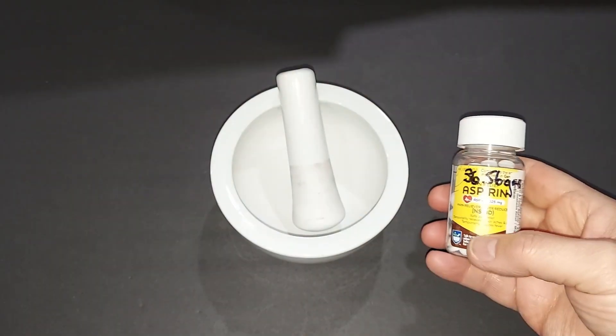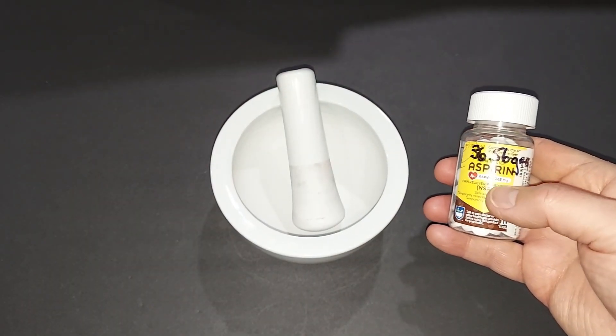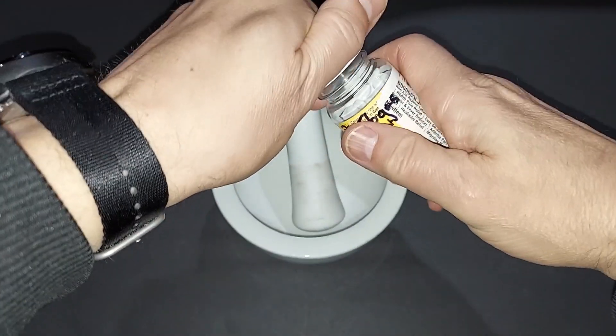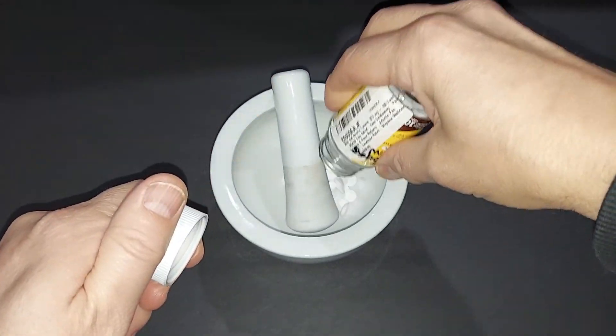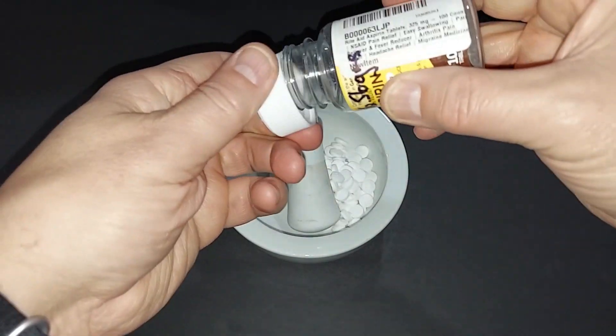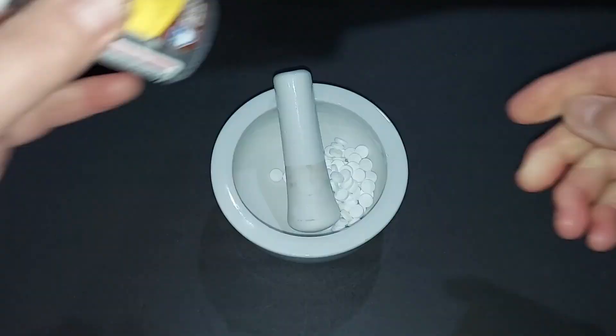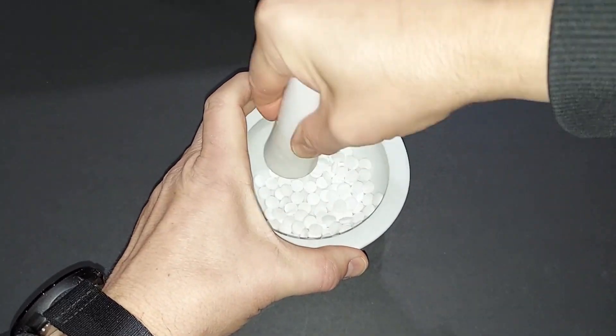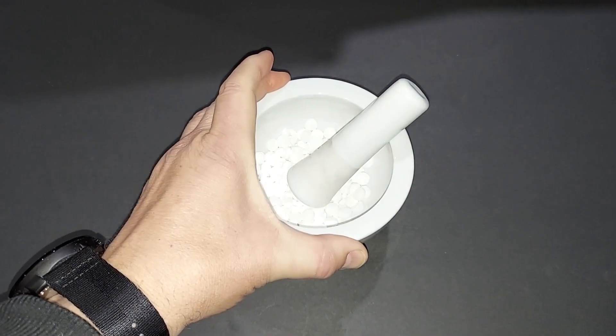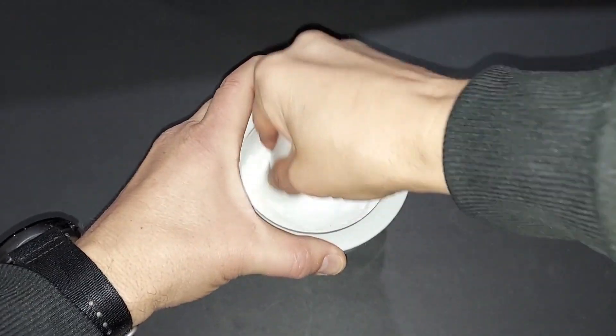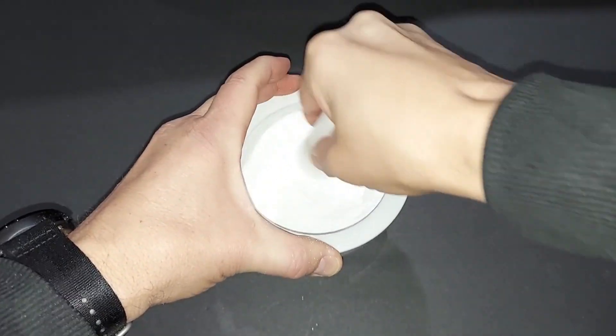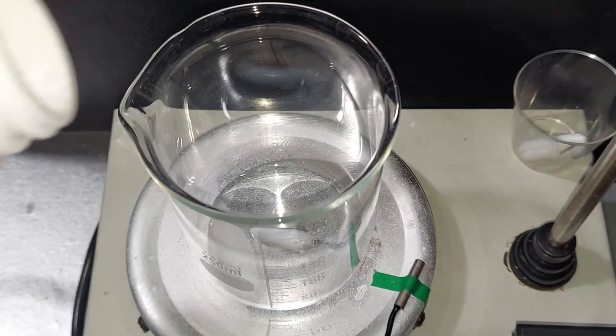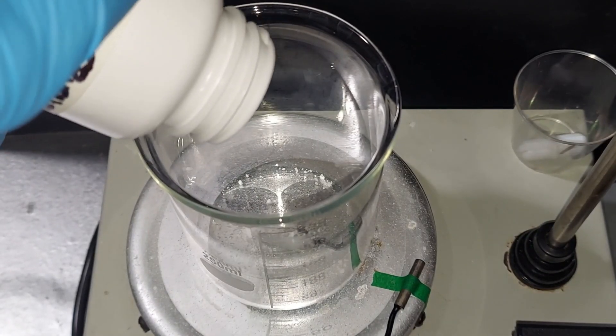Here's my bottle of aspirin. It was brand new. I weighed it. There was 36.56 grams of aspirin in here. We're going to grind this up so we can get rid of any fillers and the coating.